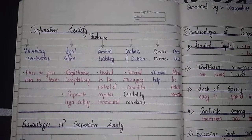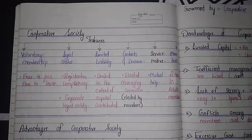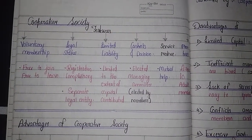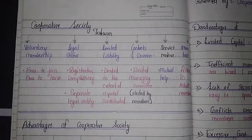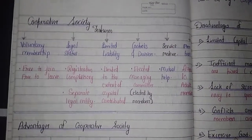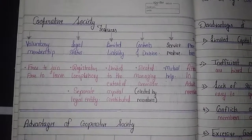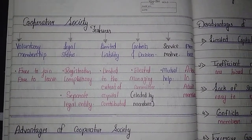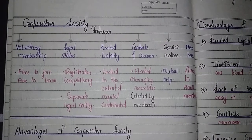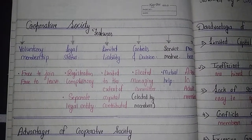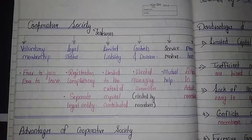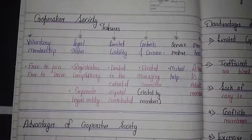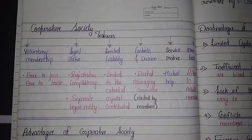Now we will talk about cooperative society. The first feature is voluntary membership — it means you are free to join and free to leave, there is no compulsion. The second is legal status, which means it will have a separate legal entity — you and your business will be considered as separate things.